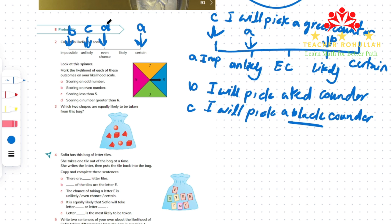Question 2 is done. In question 3 it says: which two shapes are equally likely to be taken from this bag? Looking at the bag, we have three pyramids, two cubes, and two spheres. The pyramids are more, and the two shapes with equal chance of being taken are the cube and the sphere, because the number of cubes equals the number of spheres.